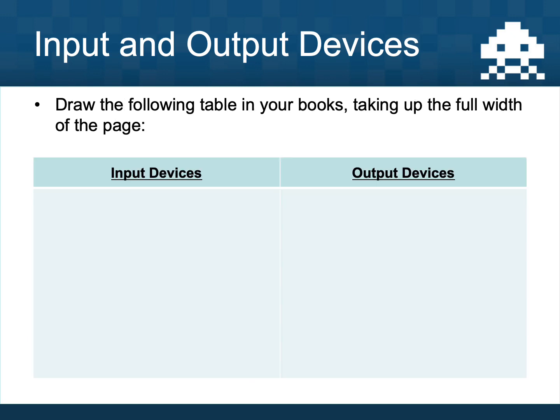For a final activity today, draw the following table in your book taking up the rest of the page. We need two columns — one that says 'input devices' and one that says 'output devices' — taking up whatever space you have left on the page, hopefully about a third. Pause the video, draw in that table, and then move on to the next slide.